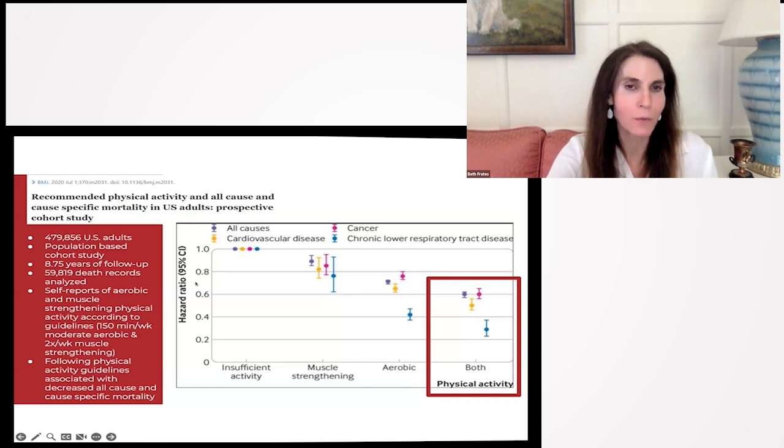The y-axis is the hazard ratio, a chance of dying. Here in purple, dying of all causes. In yellow, dying from heart disease, cardiovascular disease. In pink, dying from cancer. And in teal, dying from chronic lower respiratory tract disease. With insufficient activity, we're at a one, the highest risk. Add muscle strength training only and you reduce your risk of dying of these causes.